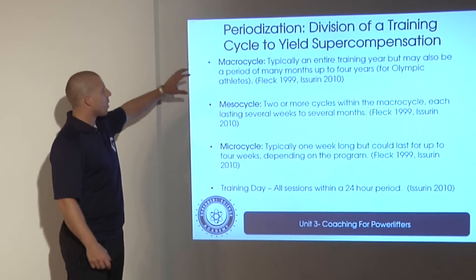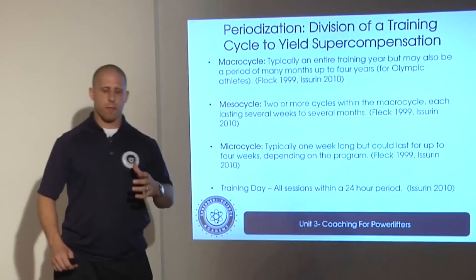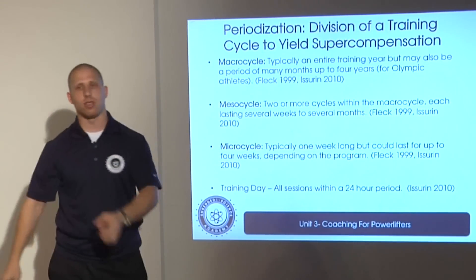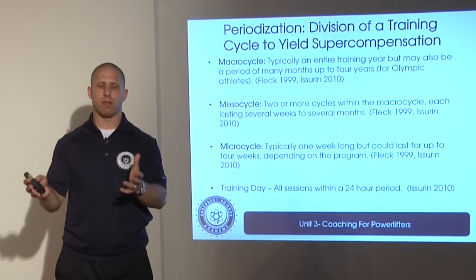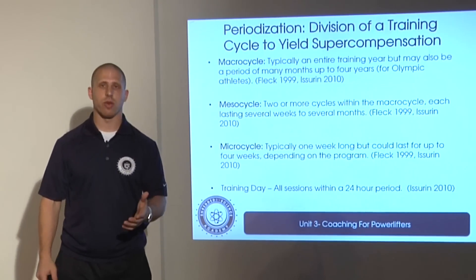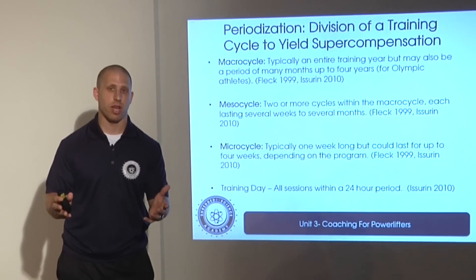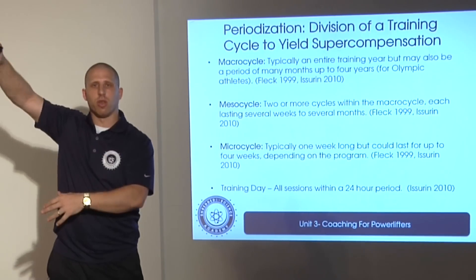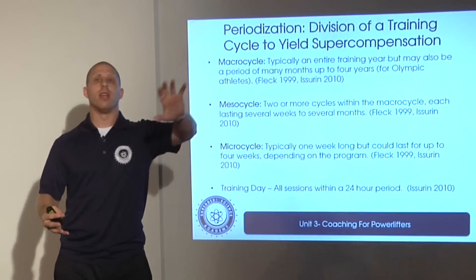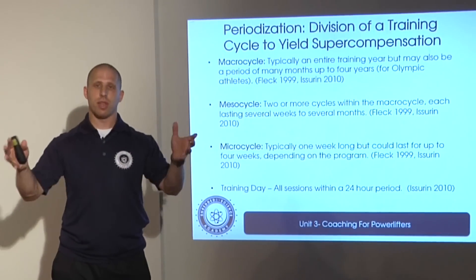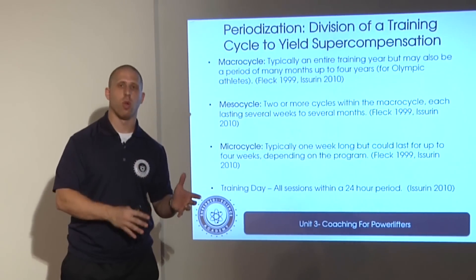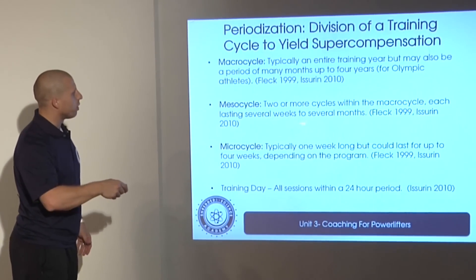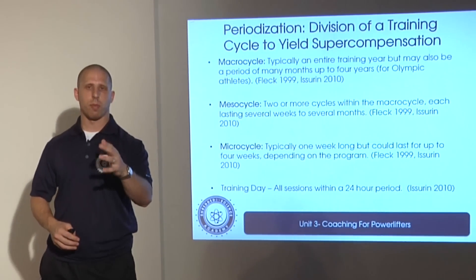We have to talk about the division of training within a year. Within a linear periodization macro cycle — one macro cycle being one year — volume goes from its highest to lowest and intensity goes from its lowest to highest. Within that we want to divide things up. A volume or hypertrophy-type mesocycle might be six weeks of training and occurs early in the year when volume is higher. An intensity-based mesocycle comes later in the year. We can break these up within a linear model into blocks. A mesocycle refers to two or more cycles within the macro cycle, each lasting several weeks to several months — typically four to six weeks for our purposes.